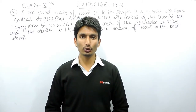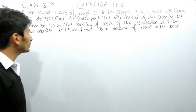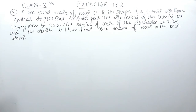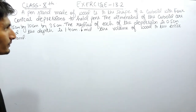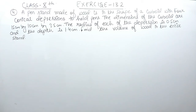Hello everyone, we are from True Math and in this video we are going to solve question number 4 of exercise 13.2. The question says a pen stand made of wood is in the shape of a cuboid with four conical depressions to hold pens. The dimensions of the cuboid are 15 cm by 10 cm by 3.5 cm. The radius of each depression is 0.5 cm and the depth is 1.4 cm.